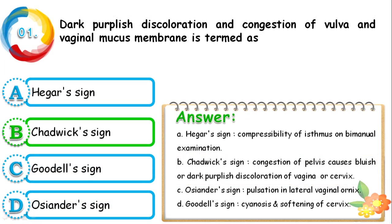You should also know the other options, as at least one sign from this area is asked each year. Hegar sign is the compressibility of the isthmus on bimanual examination. Osiander sign is when pulsation in the lateral vaginal orifice can be felt. Goodell sign is the cyanosis and softening of the cervix.